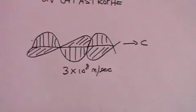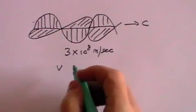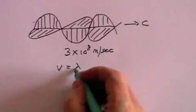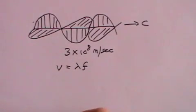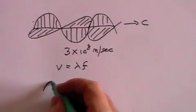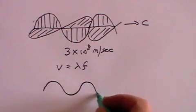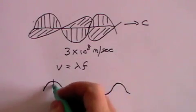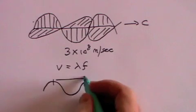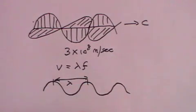Now in any wave, the velocity of a wave can be said to be its wavelength multiplied by its frequency. What I mean is that if this is a wave, the wavelength is the distance between two crests and it's given the name lambda.